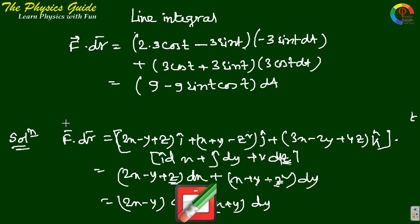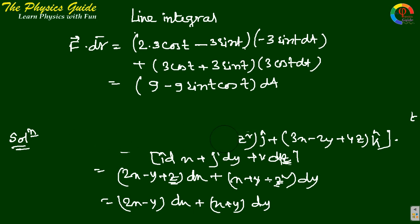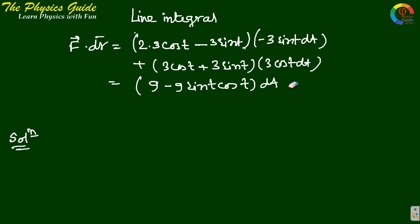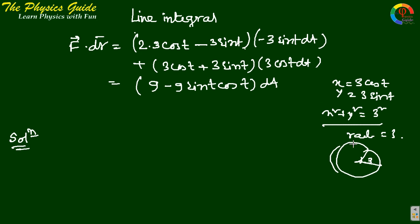Since x = 3cos t and y = 3sin t, we have x² + y² = 9, which is a circle of radius 3. The parameter t is the angle, so the integration limits are from 0 to 2π.